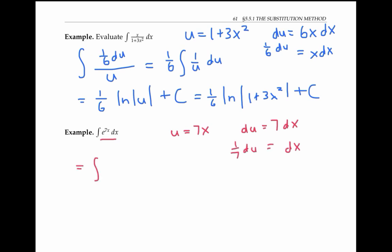Substituting in, we have the integral of e^u times one seventh du. I can pull the one seventh out and integrate e^u to get just e^u. And substituting back for 7x, I get e^(7x) + C. I encourage you to pause the video to check that these two answers are correct by taking derivatives. You'll notice that you use the chain rule each time.